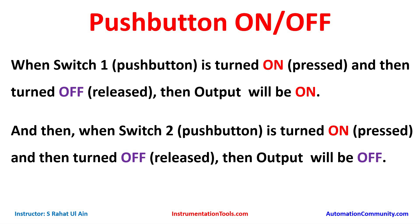Let's look at the example first. When push button one is turned on and then turned off, the output will be on. And when push button two is turned on and then turned off, the output will be off. So we have two push buttons: push button one and push button two.